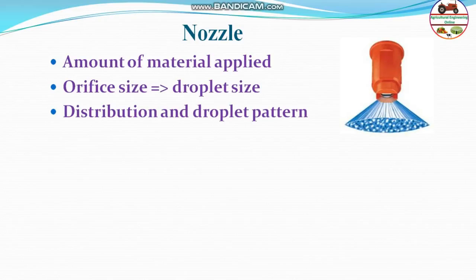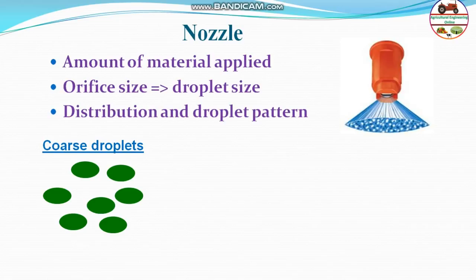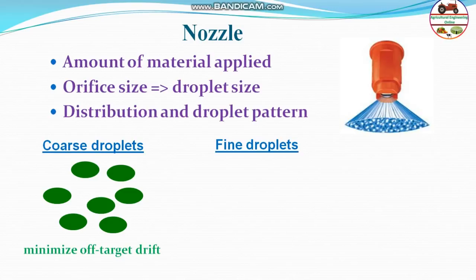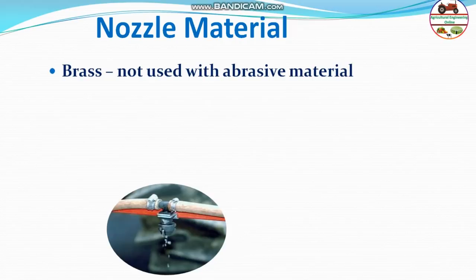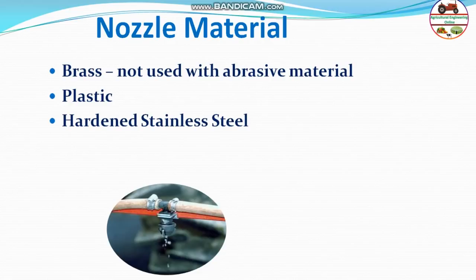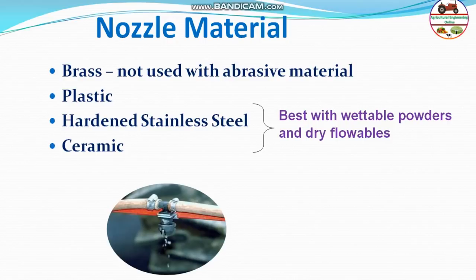If the nozzle creates coarse or large droplets, there will be less drift but more liquid is required and flooding can occur, leading to chemical loss. Fine droplets cover a larger area but result in more drift. Nozzle materials include plastic for general use, hardened stainless steel, and ceramics — the latter being best suited for wettable powders and dry flowable materials without clogging.